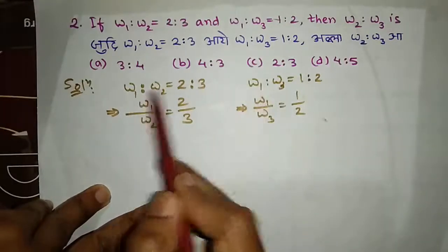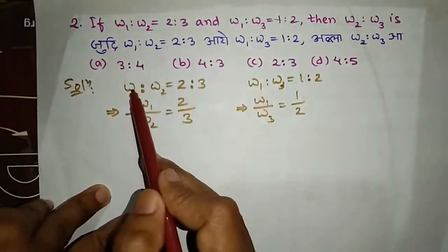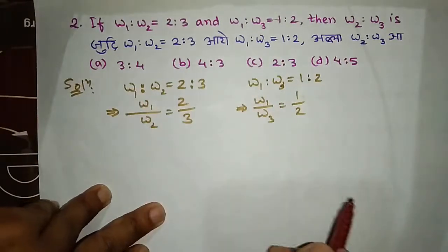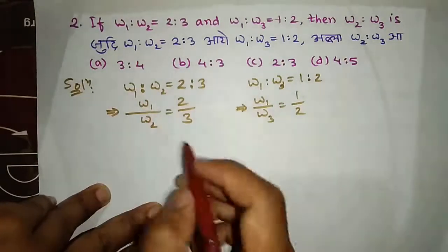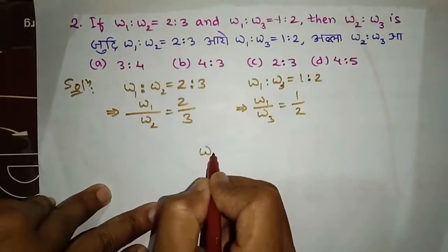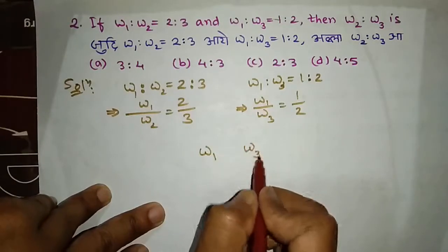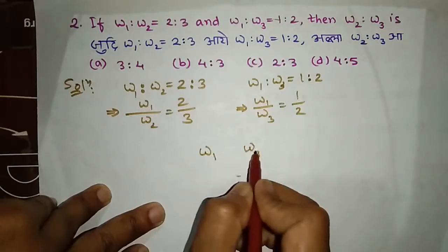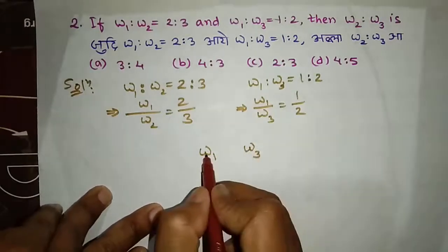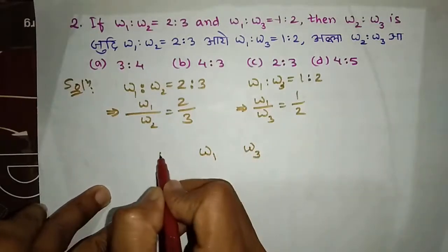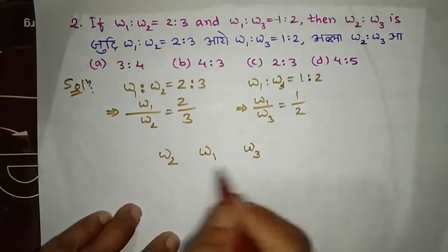Where is the common term? W1 is the common one. W1 is common to W1:W2 and W1:W3. One common term gives W1. W3 is also in the common term. When the common term uses W2 or W3, it will be W1. So if you want to use 2, you can use 3. That's the answer.